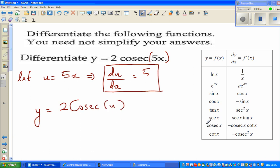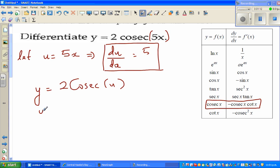Now cosec x differentiates to minus cosec x cot x. This is the formula from the formula sheet. You can prove this, but that's not what we want to do. So y prime, or dy/dx, is equal to, using this formula, minus 2 cosec u cot u.